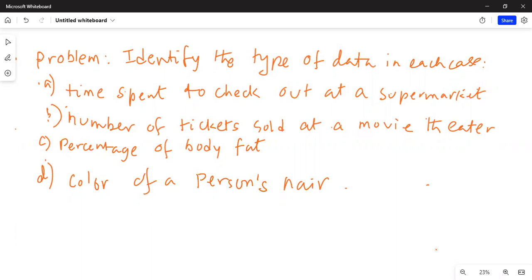Number B, number of tickets sold at a movie theater. C, percentage of body fat. And D, color of a person's hair.